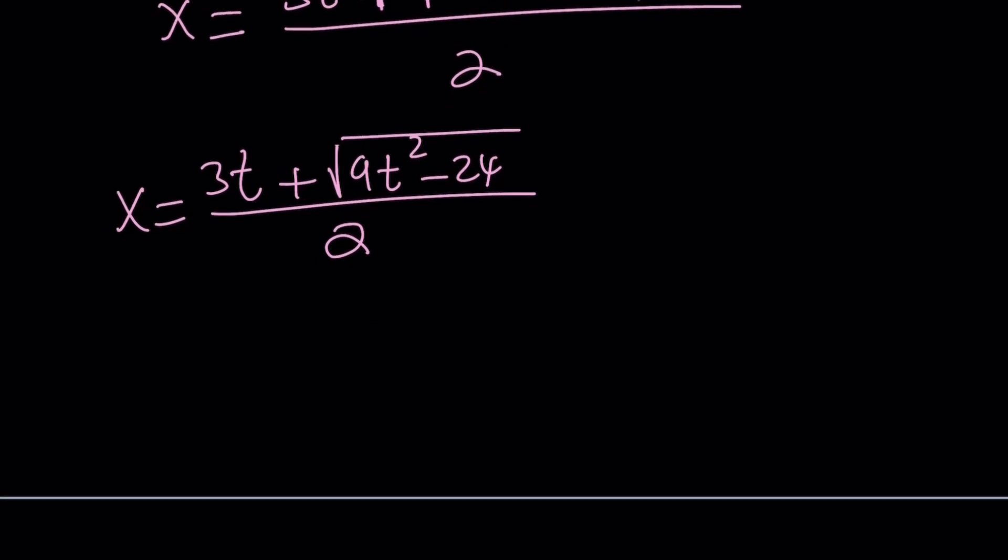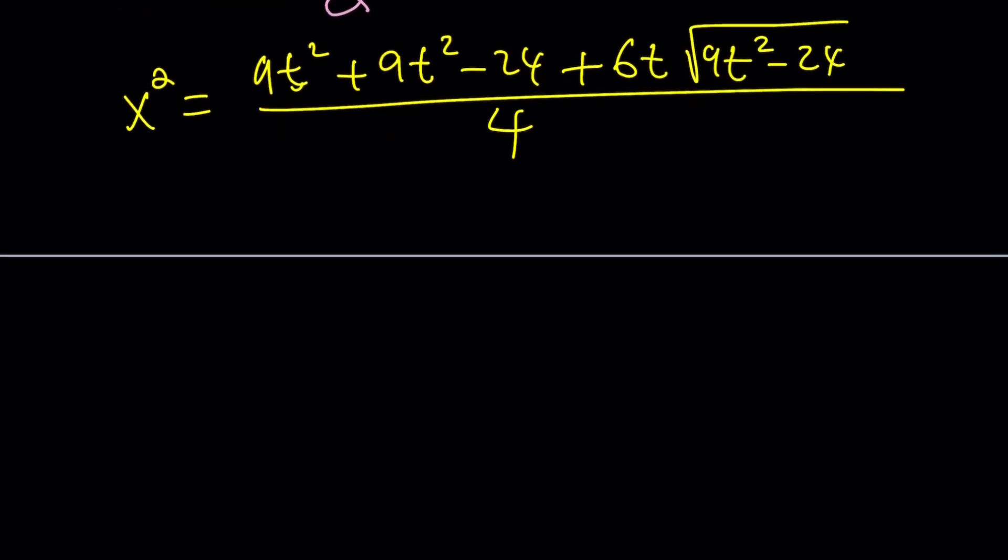So I'm going to go ahead and square this. When I square, I'll get a squared b squared plus 2ab. That's going to give me 6t times the radical, and all of that is divided by 4. Awesome. Let's simplify this a little bit.